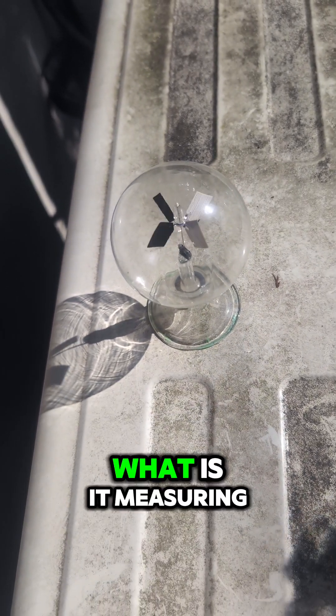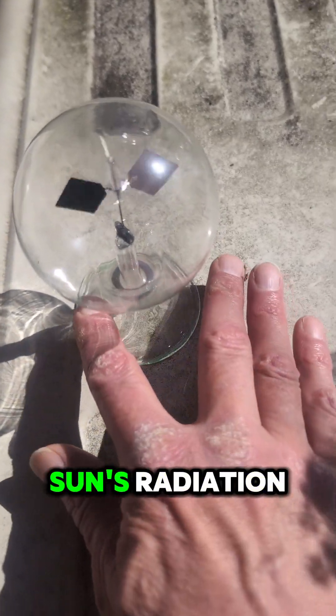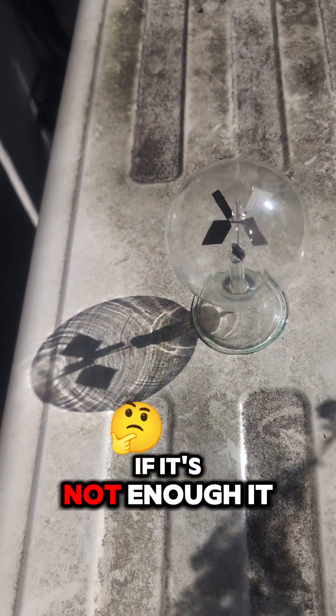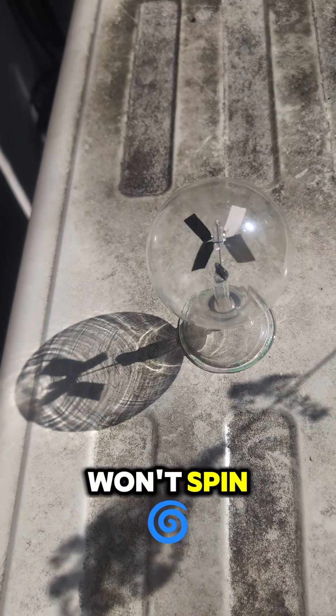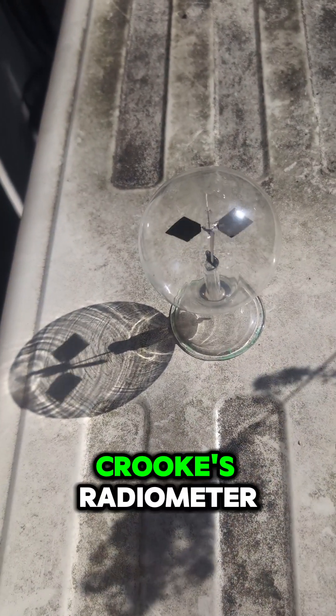And as I asked, what is it measuring? A radiometer - it's measuring the sun's radiation. If it's not enough, it won't spin. And there you go. In a nutshell, Crookes radiometer.